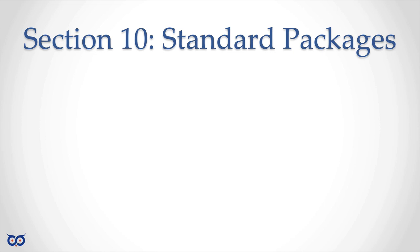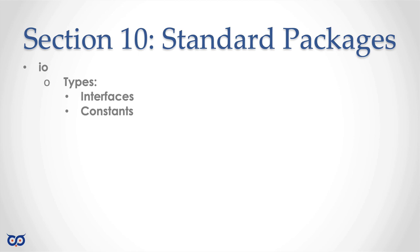So with that said, let's see what we're going to be looking at in this section. There's a package called IO for input-output, and it's sort of the foundation of a lot of things in Go. We'll look at a few types in this package — the IO package — specifically some interfaces it defines and some variables. Those are important, and we'll see why. And then we'll look at a few very nice convenient functions that are also provided in this IO package.